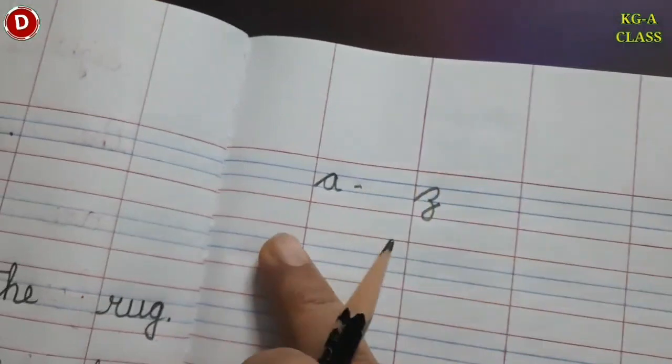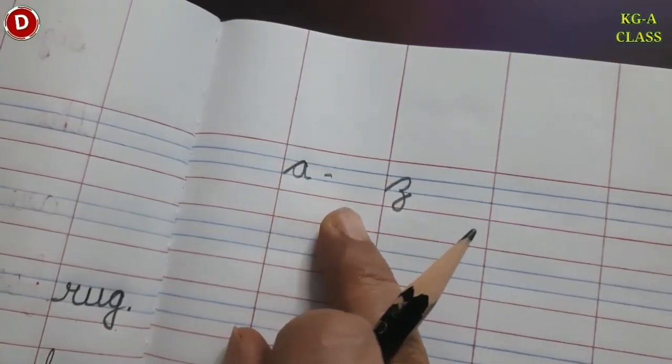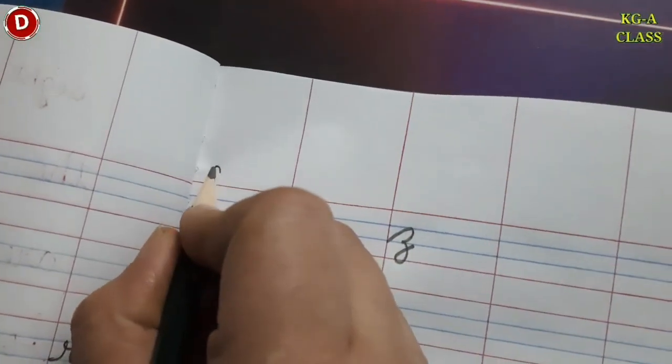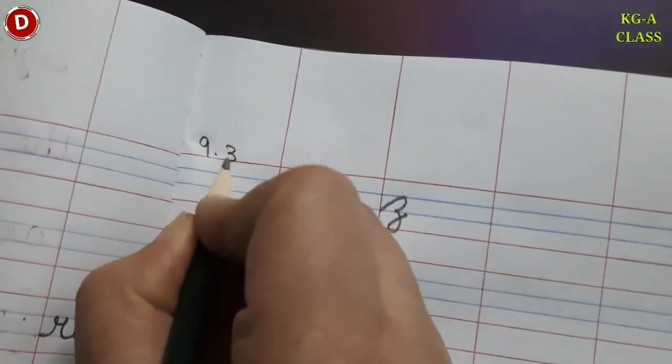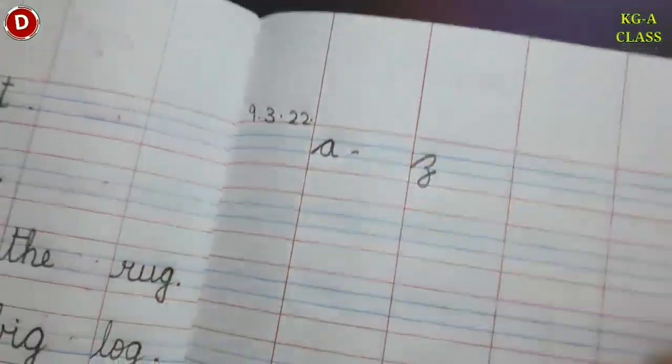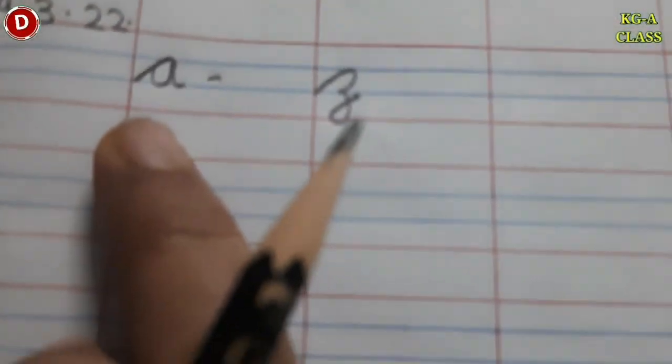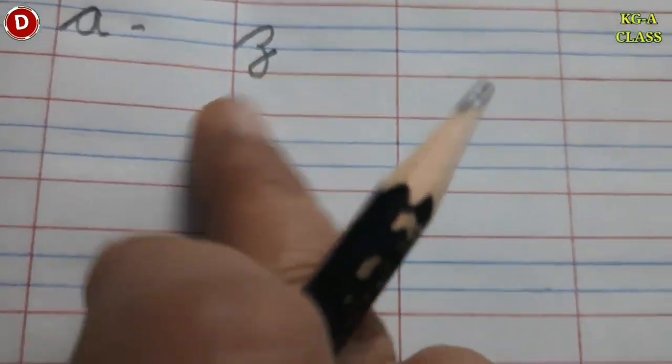See, in the first line you have to write the instruction cursive A to Z and we will write the date also. Today's date is 9th of March 2022, like this. So, in the first line we have written the instruction in which you have to write cursive A to Z.